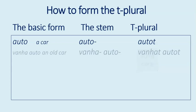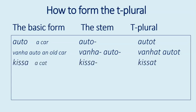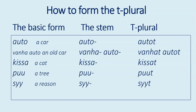Please note that if there is an adjective referring to the word, it will also take the T. For example: vanha auto — an old car, vanhat autot — old cars. A few more examples: kissa, kissat; puu, puut; syy, syyt; seinä, seinät.